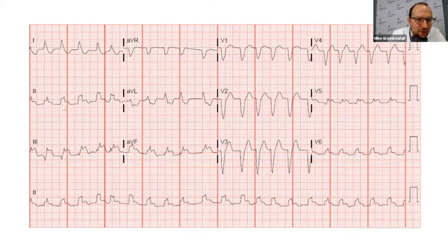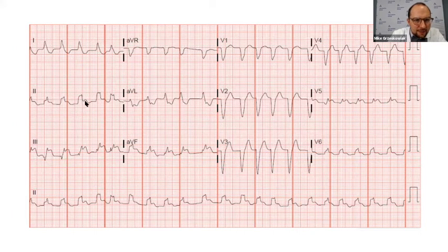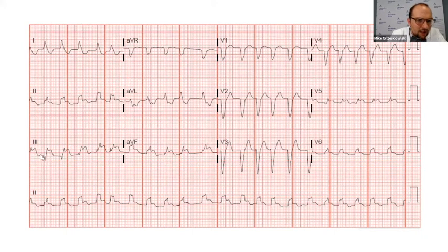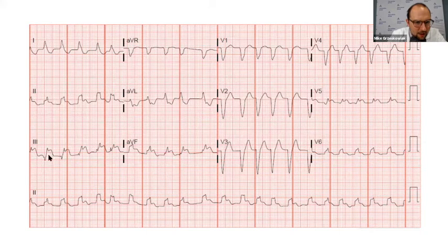Looking at lead two, this just looks kind of wonky in general — it's just kind of waving up and down. You don't really see the QRS complex clearly, maybe a T-wave there, maybe some kind of ST elevation. Then moving to the next lead, we clearly see an ST elevation. Here's the baseline, here's the QRS complex, here's the T-wave — a clear four, maybe five millimeter ST elevation.